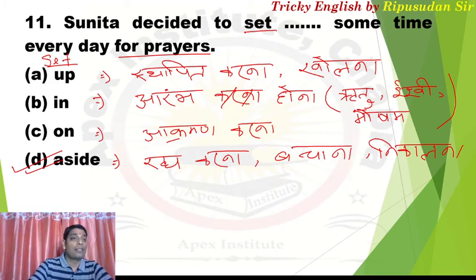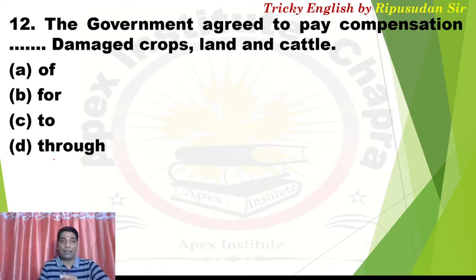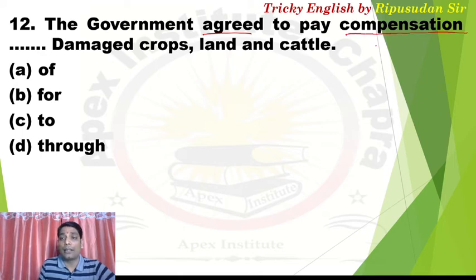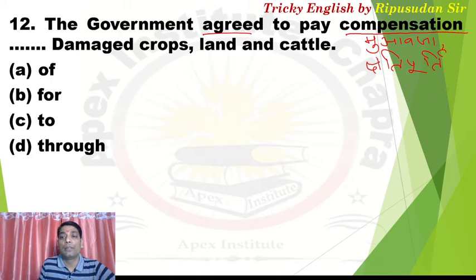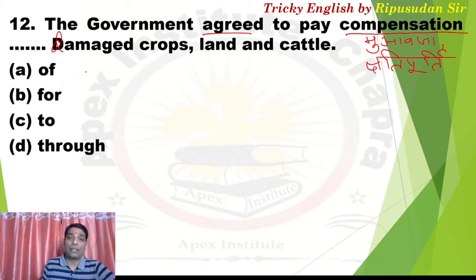Now move to Question 12. The question is: 'The government agreed to pay compensation — damaged crops, land and cattle.' The government agreed to pay compensation for damaged crops, land, and cattle.